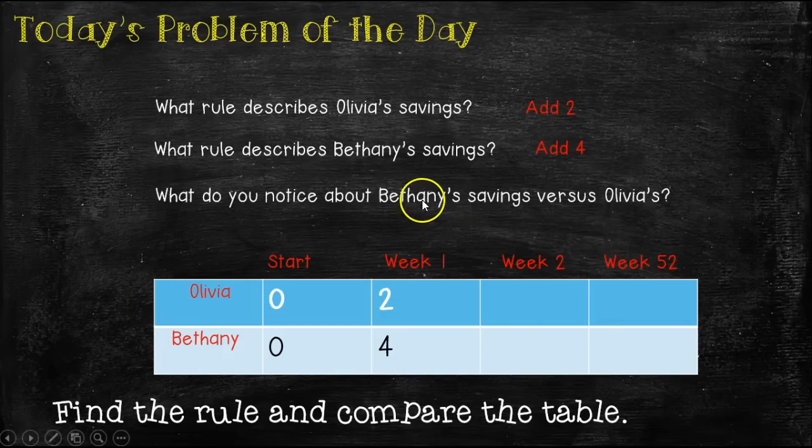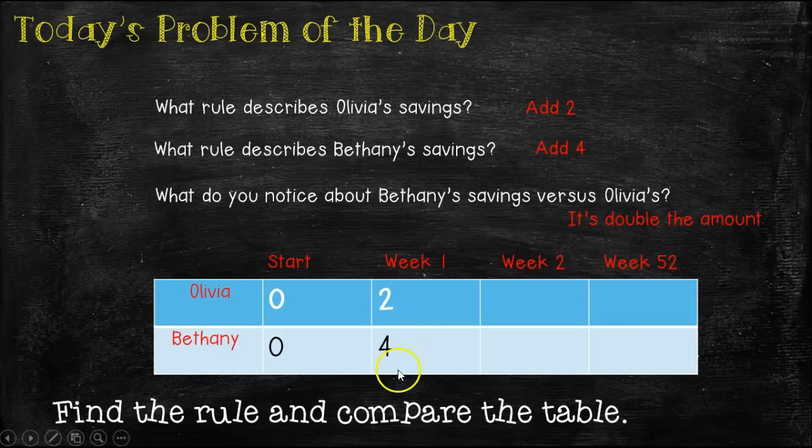So what do you notice about Bethany's savings versus Olivia's? It's pretty obvious. Bethany saves more money than Olivia does. But is there something that really adds to this relationship? Is four compared to two something interesting? It is. It's double the amount. So in week one, Olivia saved $2 and Bethany saved $4. $4 is double the amount of two.